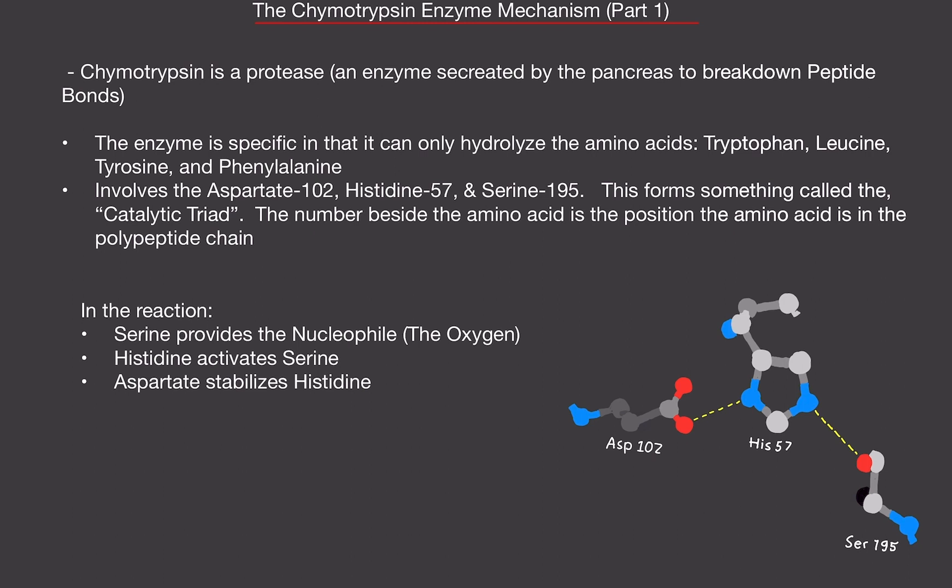Chymotrypsin is a protease. A protease is an enzyme that breaks down proteins. So whenever you eat any type of protein - eggs, meat, soy, tofu, anything like that - chymotrypsin is involved. It's a protease. We need some kind of enzymes to break them down in our body.